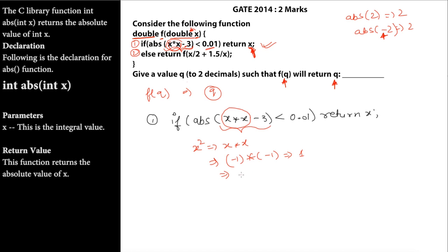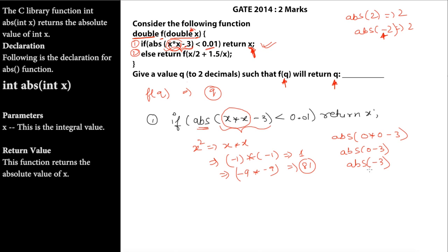Similarly, -9 multiplied by -9 gives 81 — any negative number squared becomes positive. Also, the ABS function makes any result positive in any case. For example, if we give X = 0, the expression becomes ABS(0 * 0 - 3) = ABS(-3) = 3, but 3 is not less than 0.01, so X = 0 does not work.